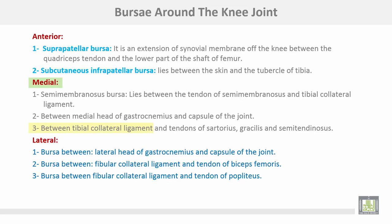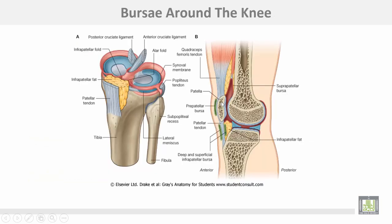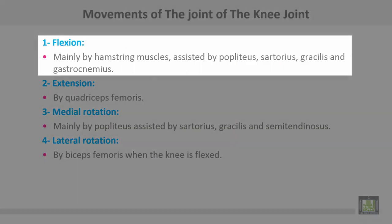There is also a bursa between the tibial collateral ligament and the tendons of sartorius, gracilis, and semitendinosus. Laterally, there is a bursa between the lateral head of gastrocnemius and the capsule of the joint, another bursa between the fibular collateral ligament and the tendon of biceps femoris, and a bursa between the fibular collateral ligament and the tendon of the popliteus muscle. This is the prepatellar bursa, this is the superficial infrapatellar, and this is the deep infrapatellar bursa.